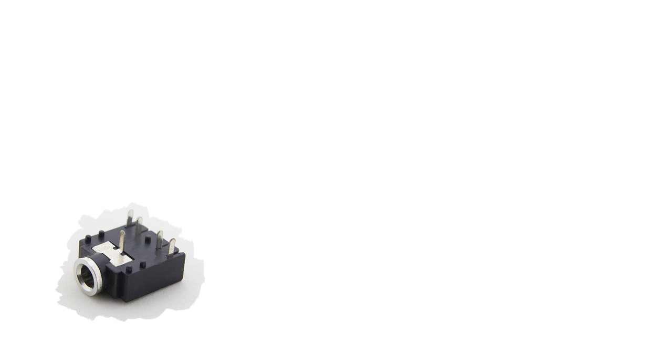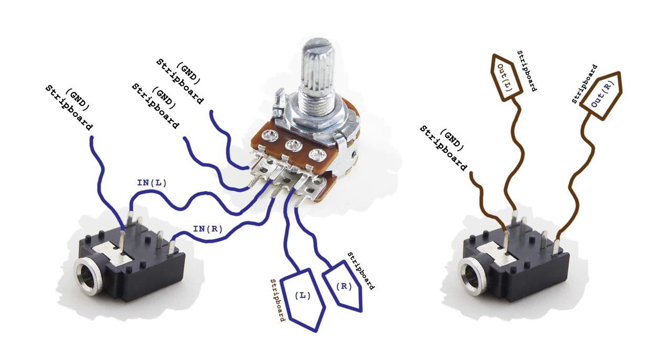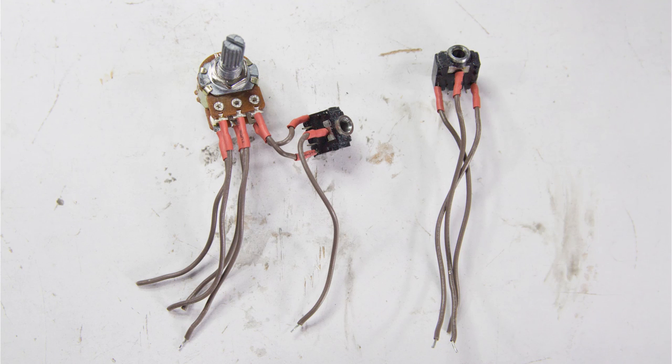Next, let's add some wires to the 3.5mm stereo sockets and the dual 10K potentiometer. Here is how you connect them. Keep the wires relatively short.